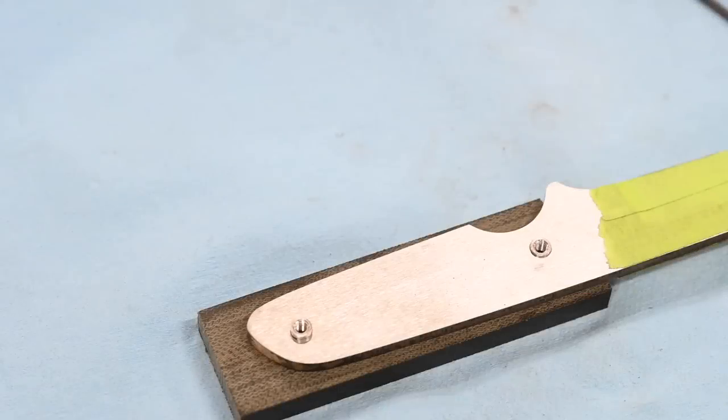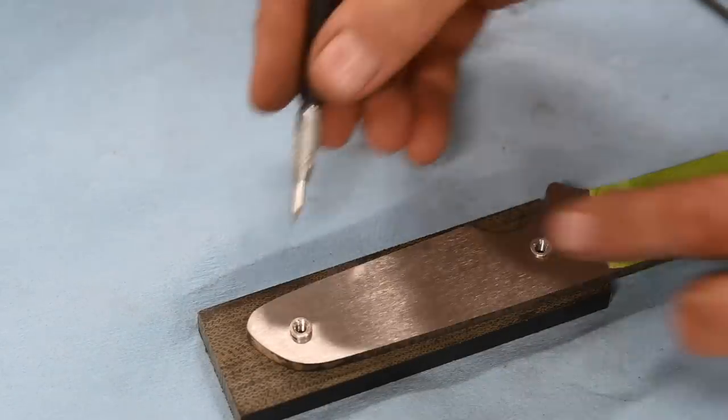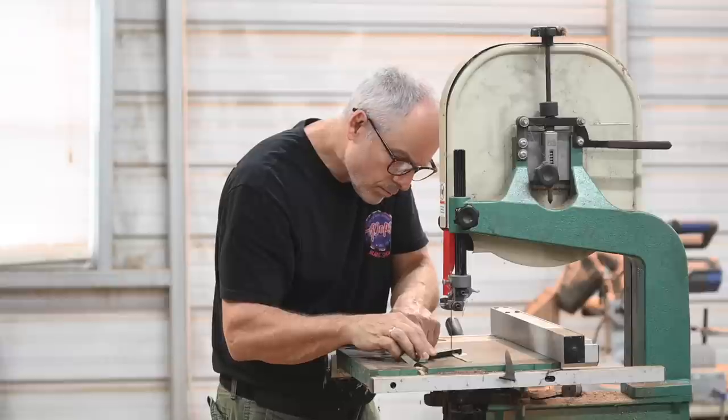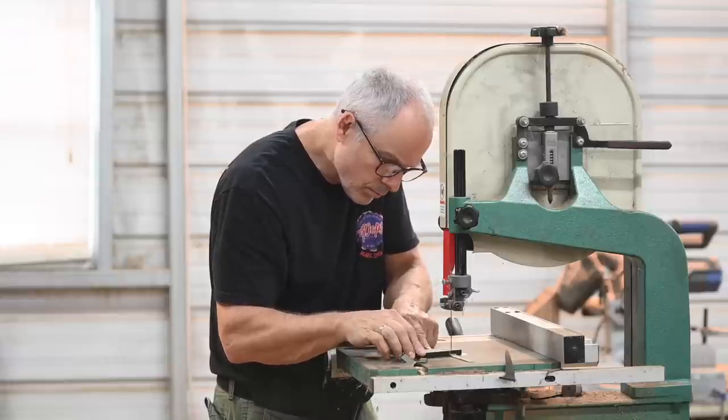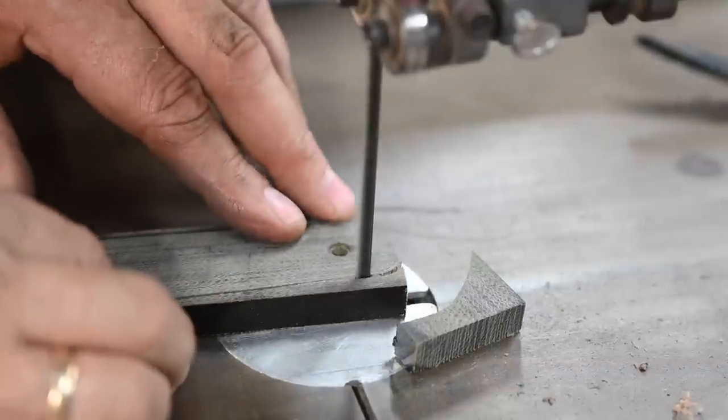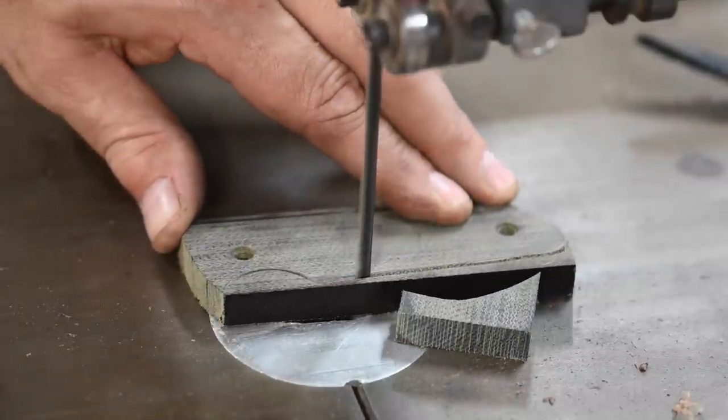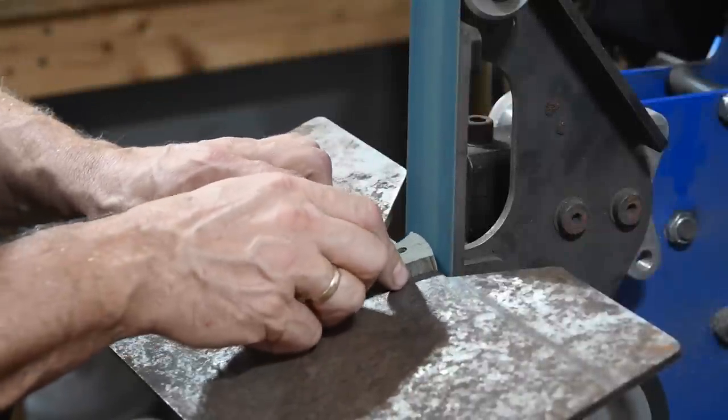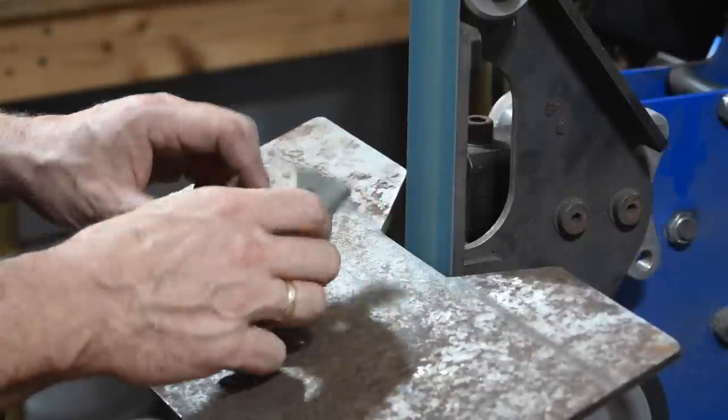So, once all this is done, I'll mark out the profiles of handle scales and cut them roughly to shape on my bandsaw. You can just grind them, but this saves you about half an inch of micarta dust in your shop. I'll also grind the front faces of the scales using the adjustable table angle.